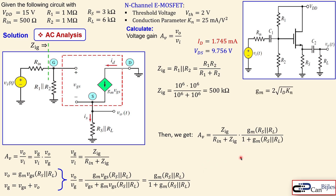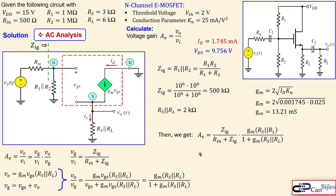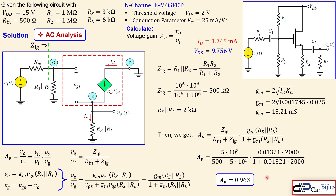Now let's calculate GM and the other required parameters. GM is given by the square root of 2 times KN times ID. Substituting the values gives GM of 13.21 mS. The parallel combination of RS and RL — three and six kilohms in parallel — gives 2 kilohms. Substituting all values into the gain expression gives AV of 0.963. The output is not inverted and the gain is less than 1, so this is actually an attenuation. The purpose of this circuit is a large input impedance, not high voltage amplification.